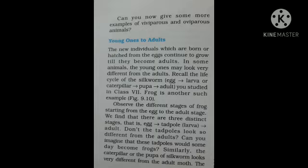The new individuals which are born or hatch from eggs continue to grow until they become adults. In some animals, the young one may look very different from the adult. Recall the life cycle of the silkworm studied in Class 7 — it has four stages: egg, larva or caterpillar, pupa, and adult. The second example is the frog. In these animals, the young ones are totally different from the adult, so we will discuss metamorphosis — these drastic changes which happen in these animals.